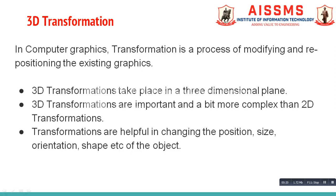First of all, let us see what is 3D transformation. In computer graphics, transformation is a process of modifying and repositioning the existing graphics. 3D transformation takes place in a three-dimensional plane, meaning a plane containing X, Y, and Z axes. 3D transformations are important and a bit more complex than 2D transformations.